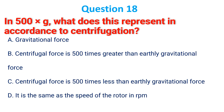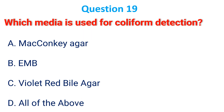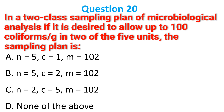In 500×g, what does the 'g' represent in centrifugation? The correct answer is B: centrifugal force is 500 times greater than the gravitational force. Which media is used for coliform detection? The correct answer is B: EMB (Eosin Methylene Blue) agar.